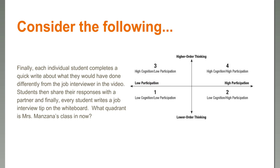In our final scenario, individual students complete a Quick Write — a basic TPT — about what they would have done differently from the job interviewers in the video. Students then share their responses with a partner, and finally every student writes a job interview tip on the whiteboard. We're in quadrant four — every student is engaged, every student is demonstrating their learning, evaluating and comparing what they would have done differently, and creating a tip for their classmates.